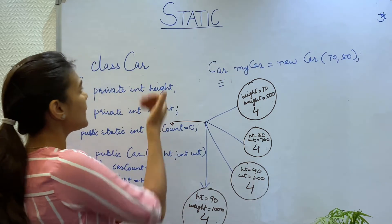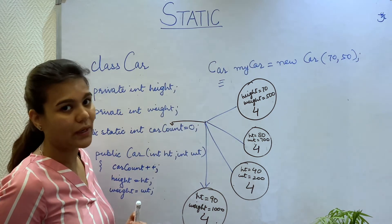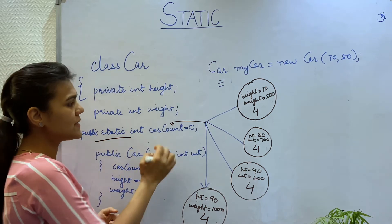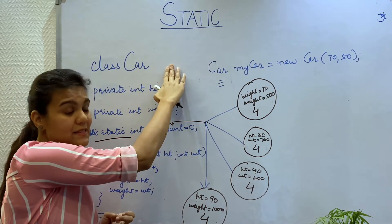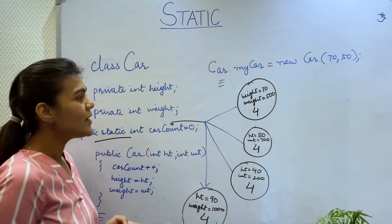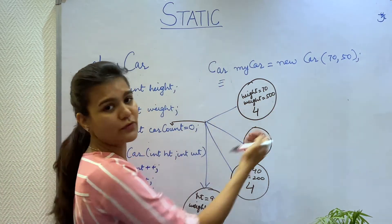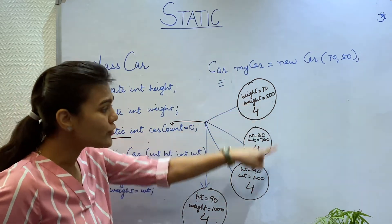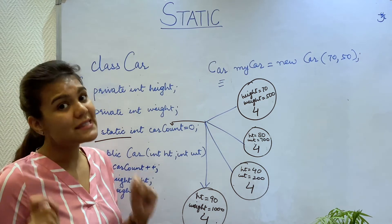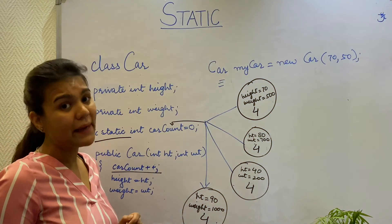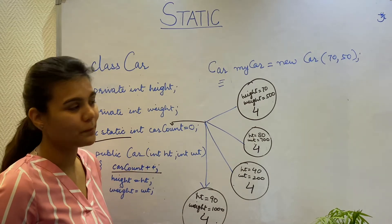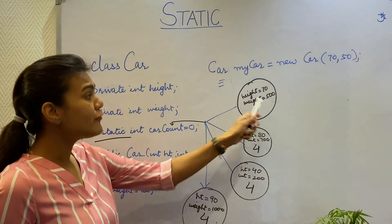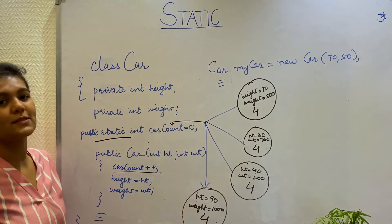I have created a car class with height and weight as instance variables, whereas the car count is declared as static. This means that the car count belongs to the car class and not to each instance of the class. So when I create instances of the class, the height and weight will vary for each of the instances, but each instance is going to share the same car count variable, and it gets incremented every time the constructor of the car is called. I have created four instances, so the car count becomes four and four is shared across all the various instances of the class.